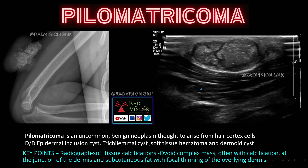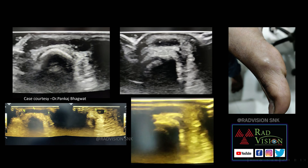Here you can see diffuse soft tissue calcification on radiograph, and an ovoid complex mass showing calcification at the junction of the dermis and subcutaneous fat with focal thinning of the overlying dermis — this is a classical case of pilomatricoma. Whenever you see extensive dense soft tissue calcifications along with ovoid complex masses with classical calcifications, suspect pilomatricoma.